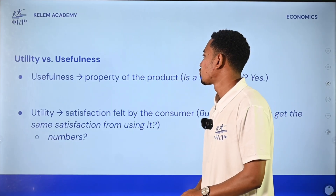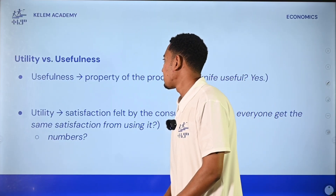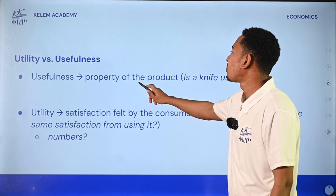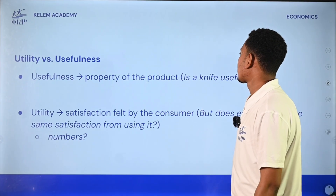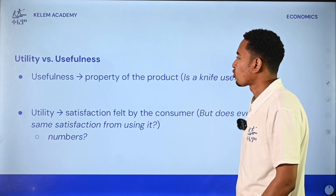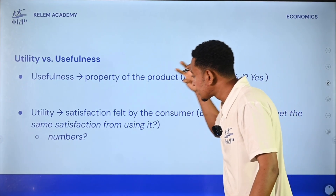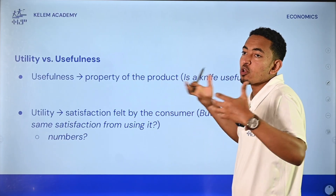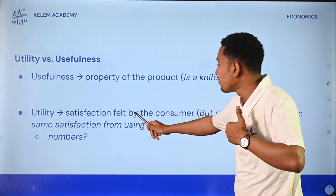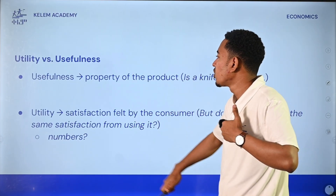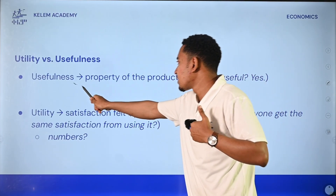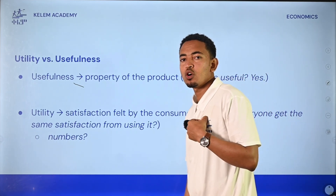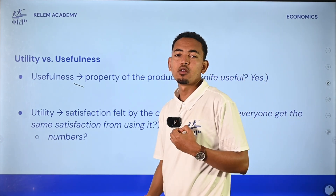Utility and usefulness are the property of the product. Utility is the satisfaction — satisfaction from consumer, emotional, physical, etc.